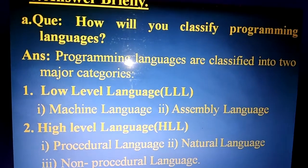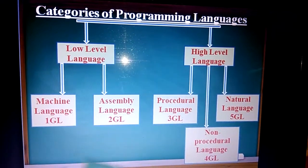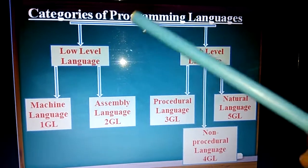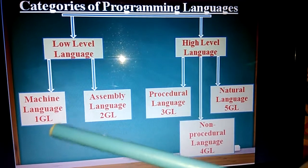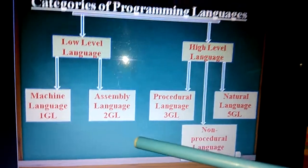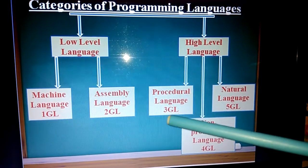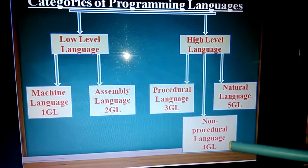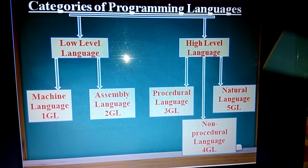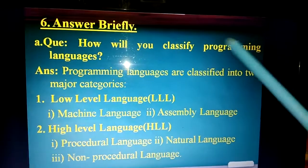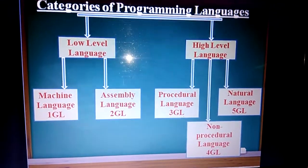Also make this flowchart in your notebook — Category of Programming Languages: Low-Level Language includes machine language (first generation) and assembly language (second generation). High-Level Language includes procedural language (3GL), non-procedural language (4GL), and natural language (5GL). First write down the content, then make the flowchart.